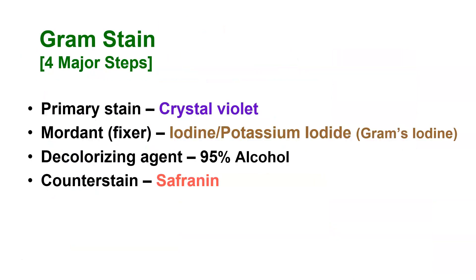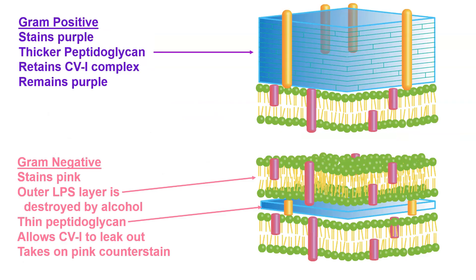We also do the gram stain, which has four major steps. The primary stain is crystal violet. The mordant/fixer is iodine-potassium iodide, which we often call gram's iodine — this complexes the crystal violet to keep it in place. The decolorizing agent is 95% alcohol. And the counter stain is safranin. The way it works is like this.